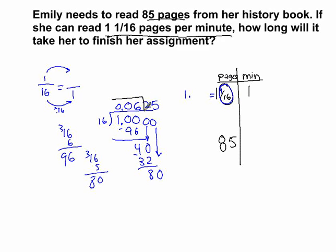You might have thought to stop early, but if you stopped at just 1.06, that would result in rounding error and would not go into 85 perfectly. So if you're using this decimal strategy, you need to see it through. As a decimal number, 1 and 1/16th equals 1.0625. Now you have something you can use.